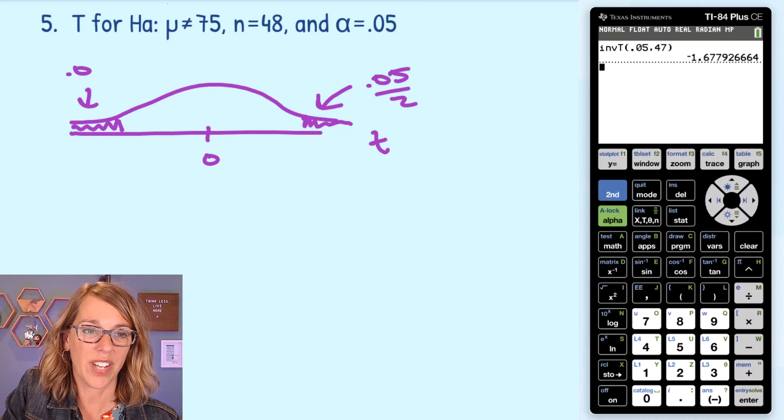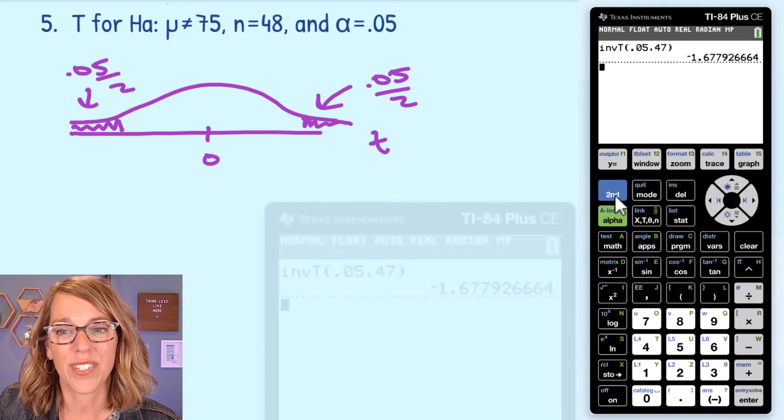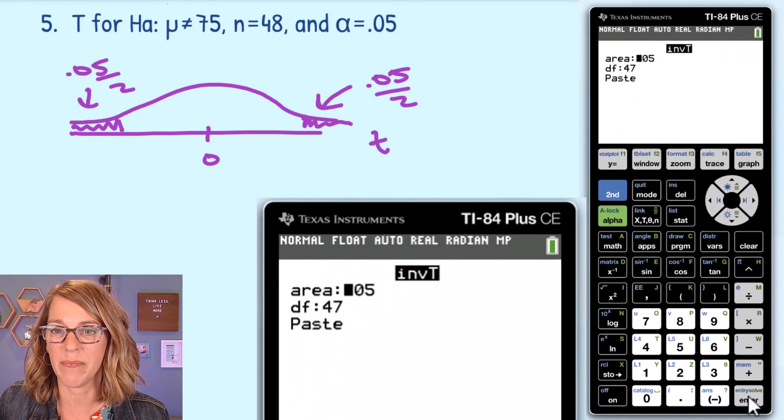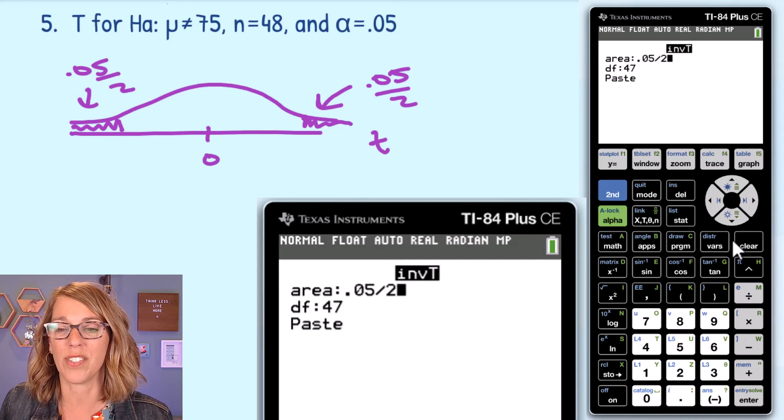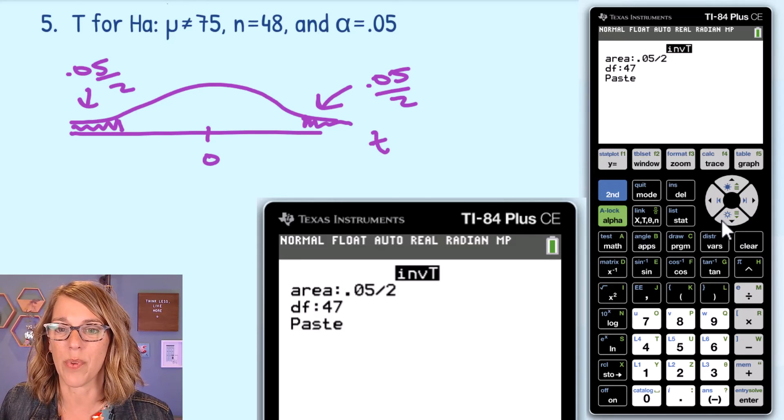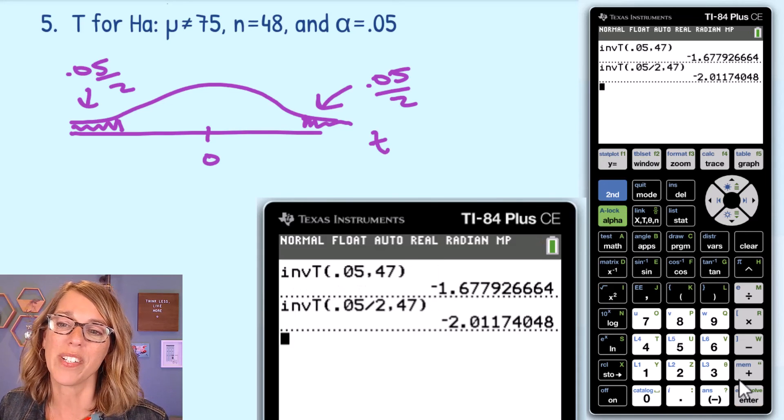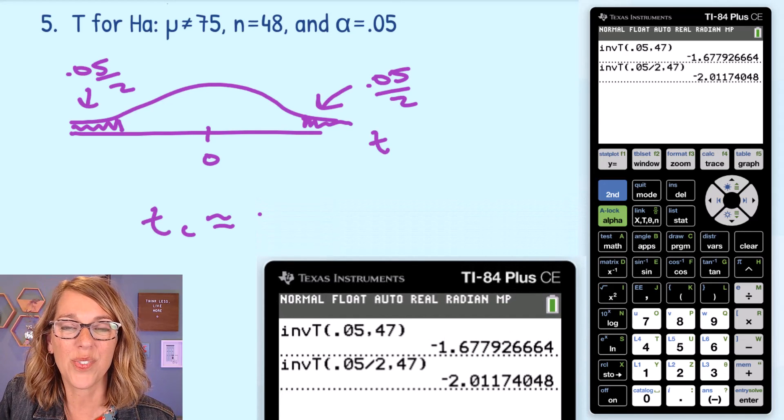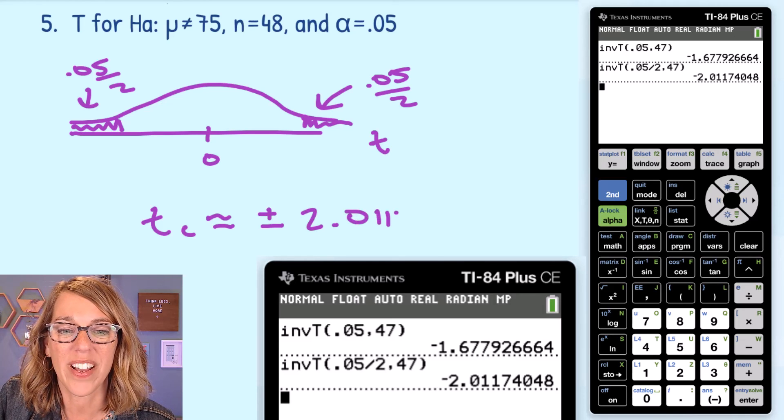So the area for both of those tails is 0.05 divided by 2. Let's go ahead and find that inverse t. I'm going to go second, distribution, and then down to inverse t. It wants the area. It's 0.05 divided by 2 for a single tail. Degrees of freedom, it is again 47 because it's 48 minus 1. So I can leave that put. And paste, I get negative 2.0117. Since this is a two-tail test, I know that I actually get two critical values. So I'm going to write those as plus or minus 2.0117.